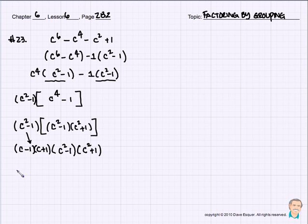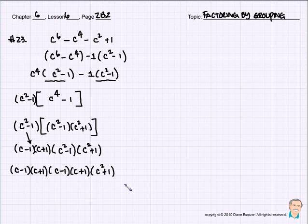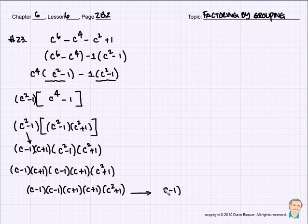And yet again, we have something else we can factor: c minus 1, c plus 1. Nothing's changed there — we know that this is the difference of two squares: c minus 1, c plus 1. And we know that this one is not the difference of two squares because there's a plus sign here. So when we collect everything, this turns out to be c minus 1 times c minus 1, and we simplify that by making it c minus 1 squared, c plus 1 squared, and c squared plus 1.